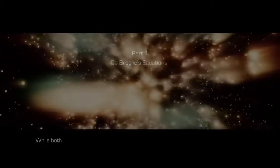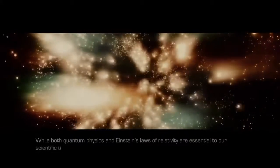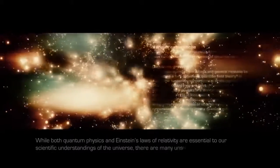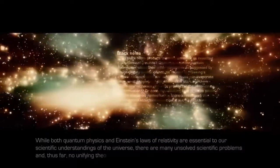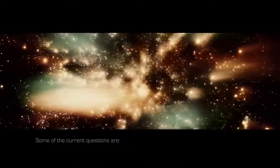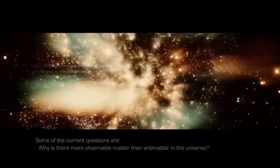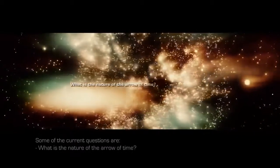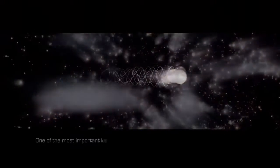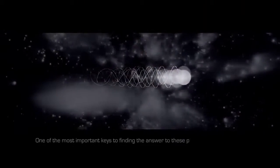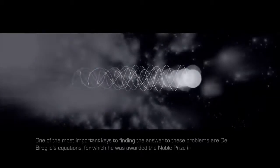While both quantum physics and Einstein's laws of relativity are essential to our scientific understandings of the universe, there are many unsolved scientific problems, and thus far no unifying theory. Some of the current questions are, why is there more observable matter than antimatter in the universe? What is the nature of the arrow of time? What is the origin of mass? One of the most important keys to finding the answer to these problems are de Broglie's equations, for which he was awarded the Nobel Prize in Physics.